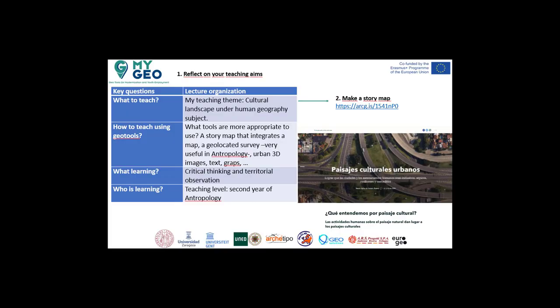A teaching example using story maps: Urban cultural landscapes. Respond to the key questions — what to teach, how to teach using geo-tools, what learning outcomes, and who is learning. This example of story maps, prepared by teachers for students after reflecting, is available here.